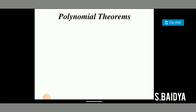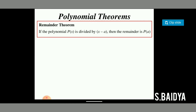Today I am going to discuss the remainder theorem, one of the polynomial theorems. Here is the statement: if the polynomial p(x) is divided by x minus a, then the remainder is p(a). That is, any polynomial p(x) of some degree is divided by a linear polynomial of the form x minus a, then the remainder will be p(x) evaluated at x equals a.